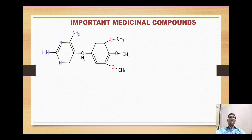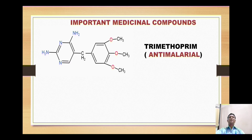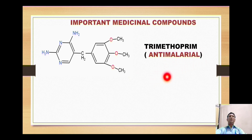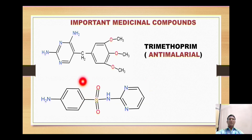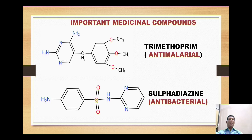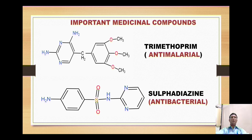Now let's move on to some important medicinal compounds. The first is trimethoprim, named due to the presence of three methoxy groups. Trimethoprim is used as a very potent anti-malarial drug. The next compound is a sulfonamide derivative called sulfadiazine. As sulfa drugs are very good antibacterial agents, sulfadiazine is used as an antibacterial. That is all about the synthesis and important medicinal compounds of pyrimidine.